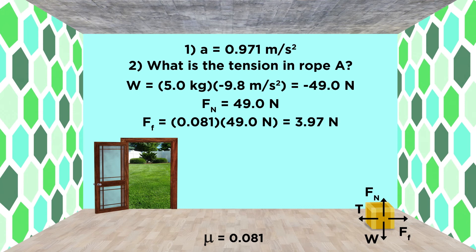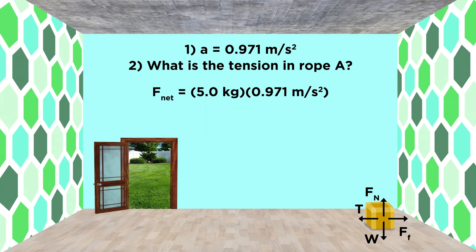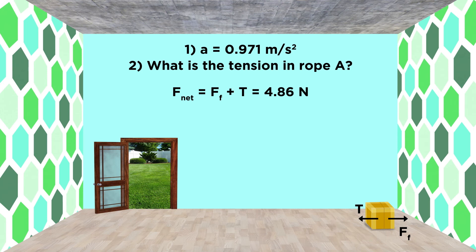Then in the forward direction, there is the tension of rope A. Now here's the clever part — we know the mass of the box, and we know the acceleration of the box, as both boxes are accelerating in the same way. So we should be able to find the net force acting on the smaller box. That's five kilograms times zero point nine seven one meters per second squared, or four point eight six newtons. But this net force is the sum of the frictional force and the tension of rope A, so we can say that friction plus tension equals net force.